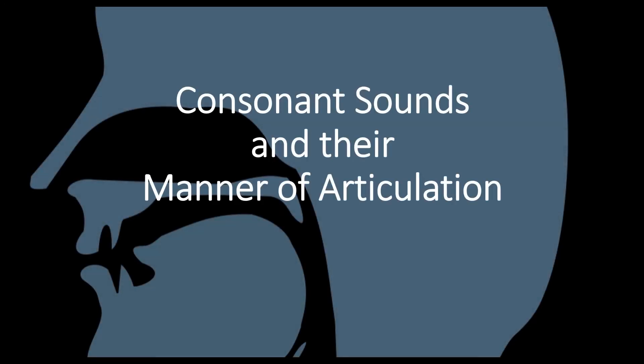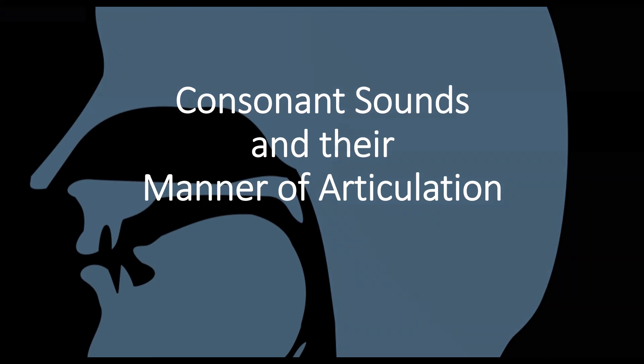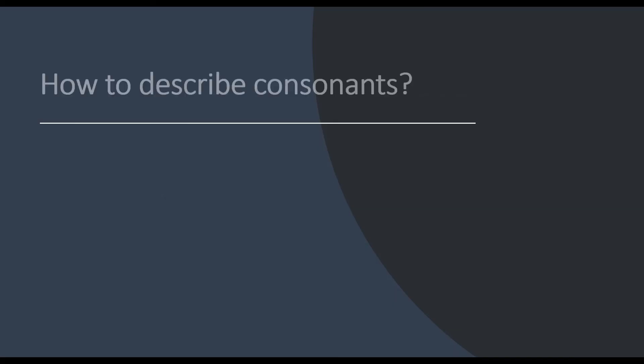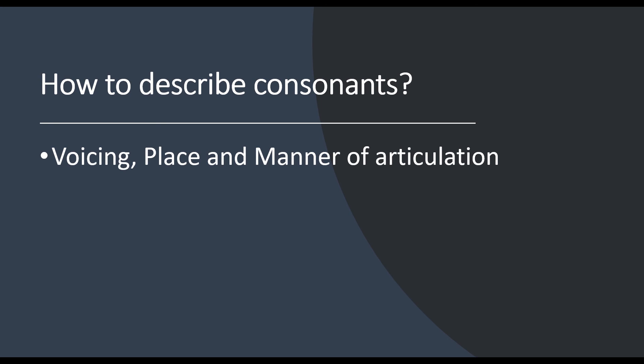Welcome to consonant sounds and their manner of articulation. Last week we were talking about how to describe consonants. There are three basic characteristics called voicing, place, and manner of articulation. Last week we looked at place, but this week we will look at manner of articulation.